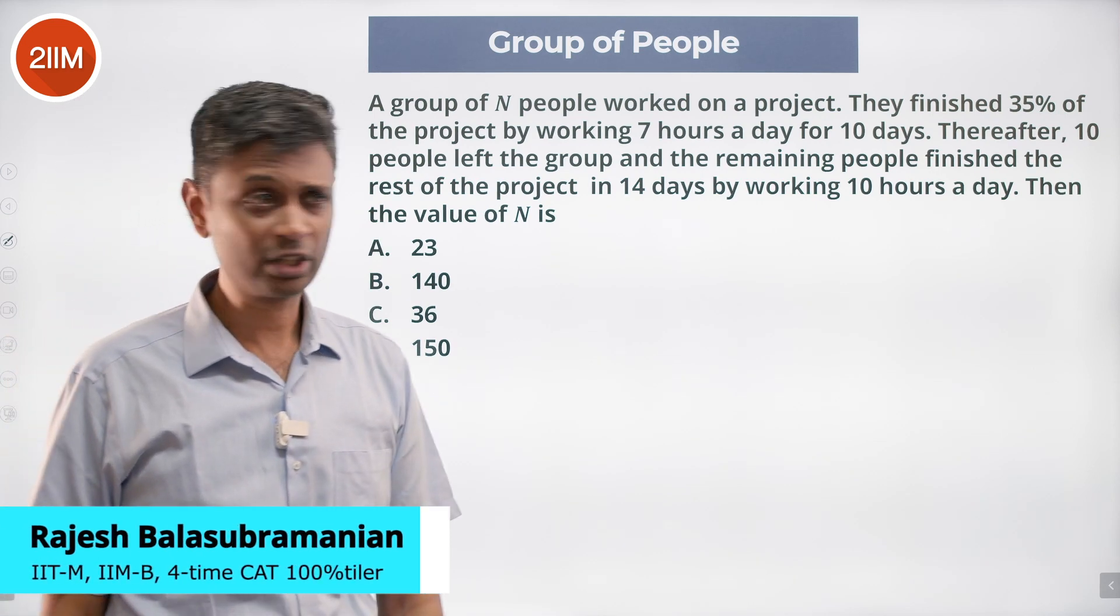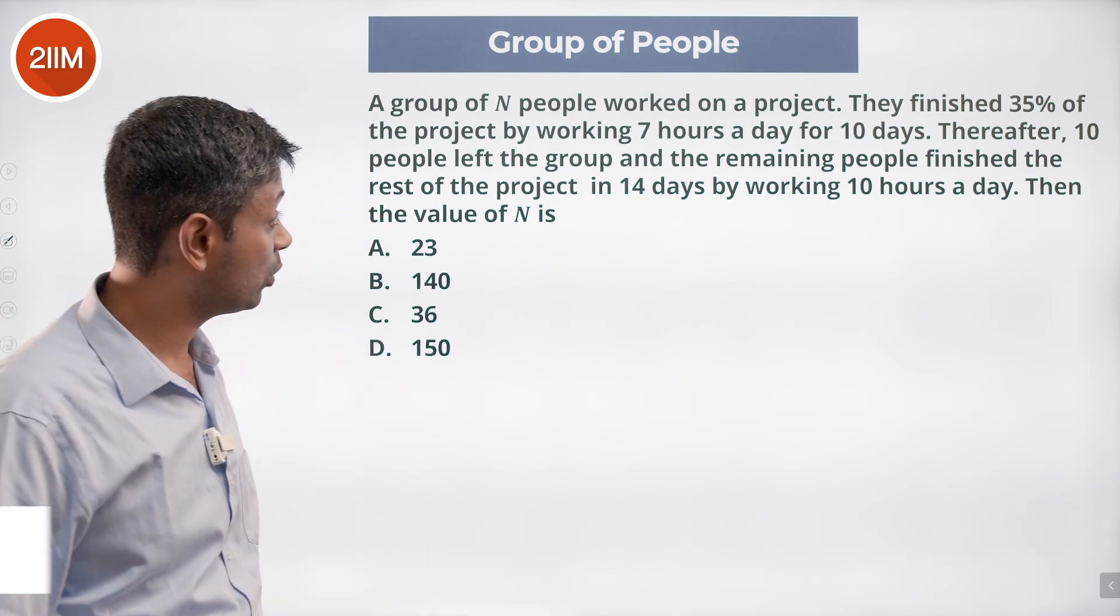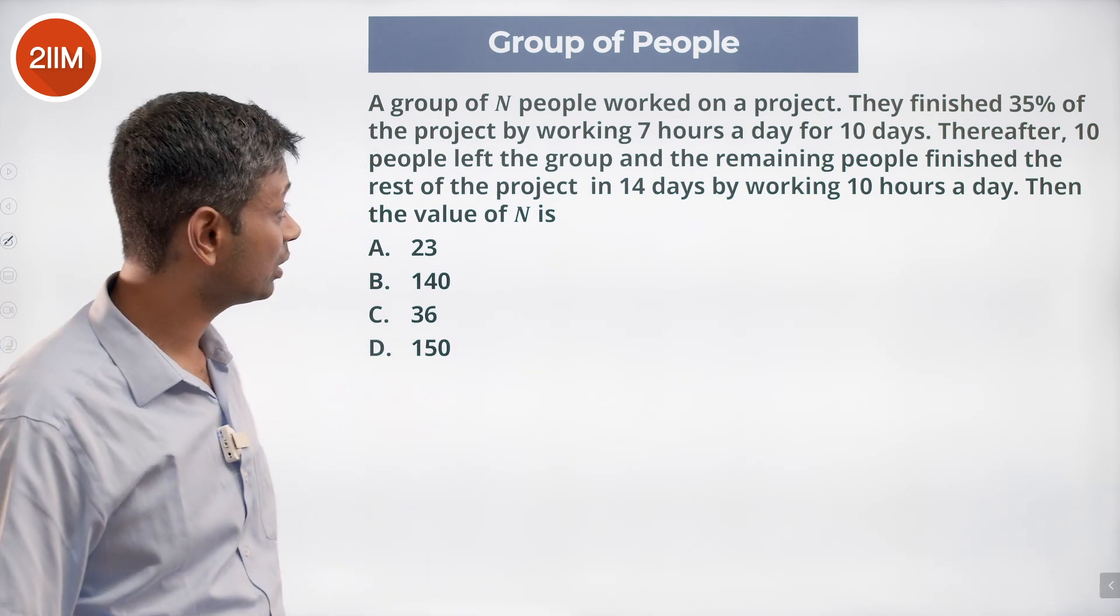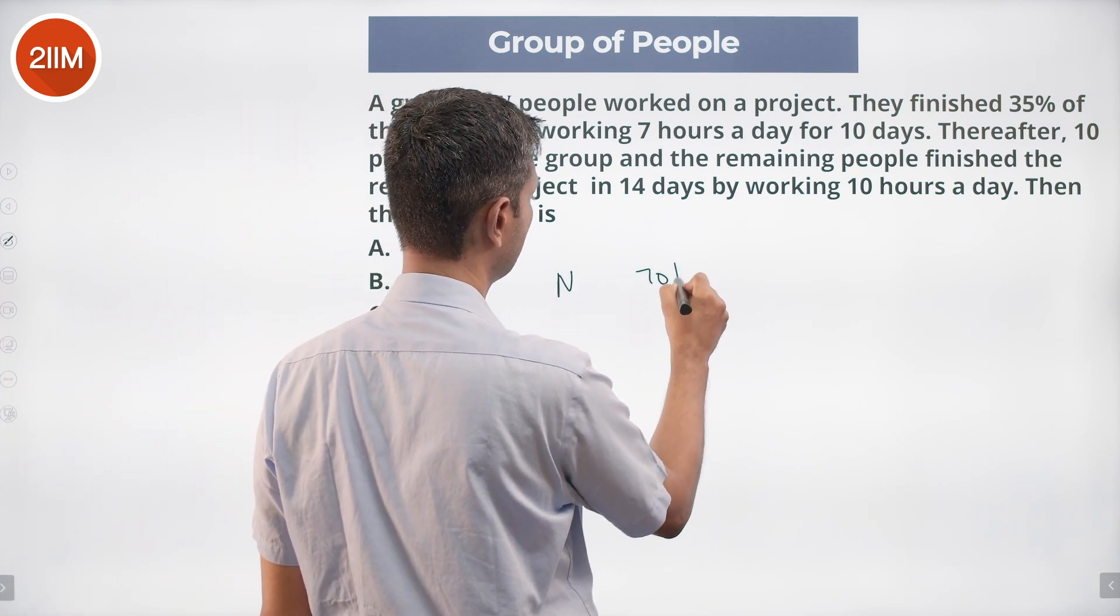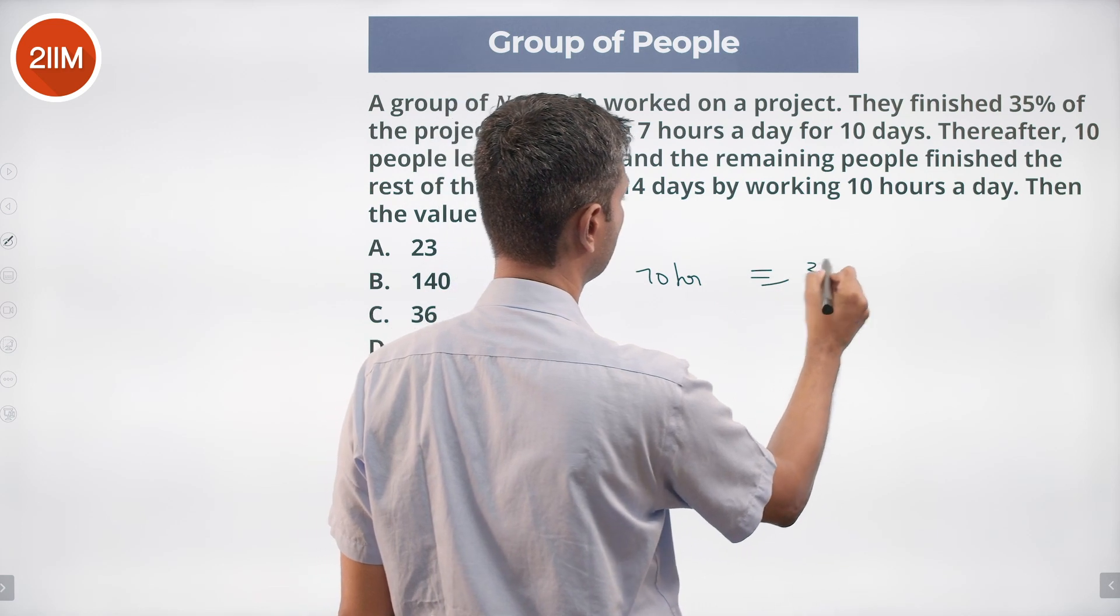A group of N people worked on a project. They finished 35% of the project by working 7 hours a day for 10 days. So N people for 70 hours corresponds to 35%.